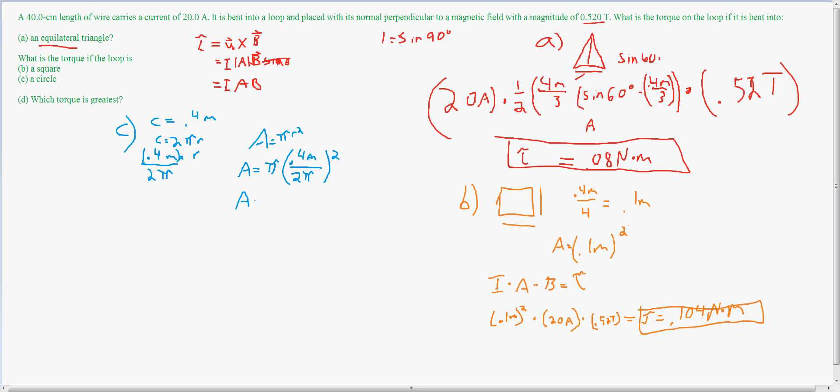Which gives us an area equal to pi multiplied by 0.16 meters divided by 4 pi squared. So pi can be cancelled. And essentially what we are left with is area equal to 0.04 meters over pi.